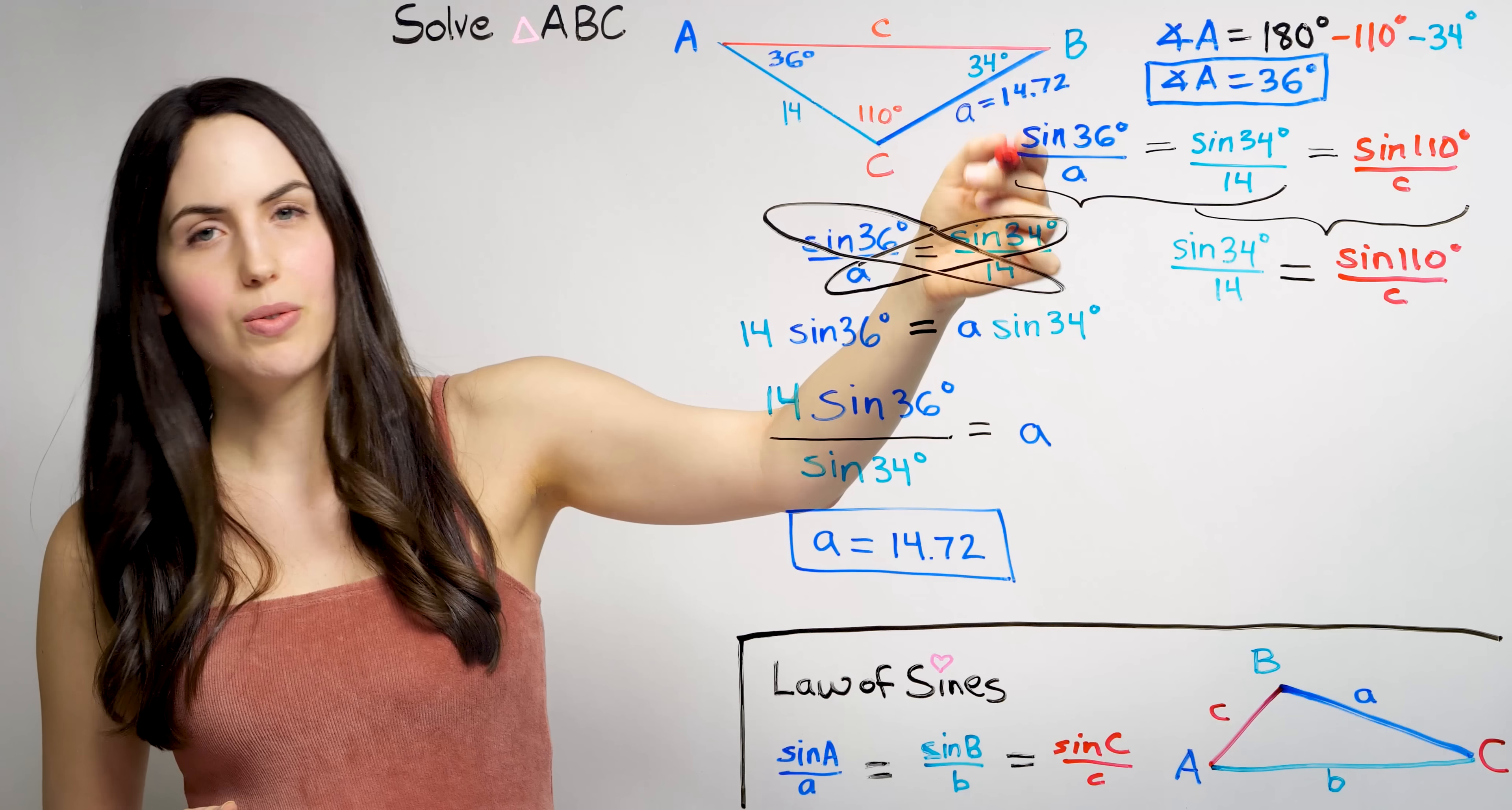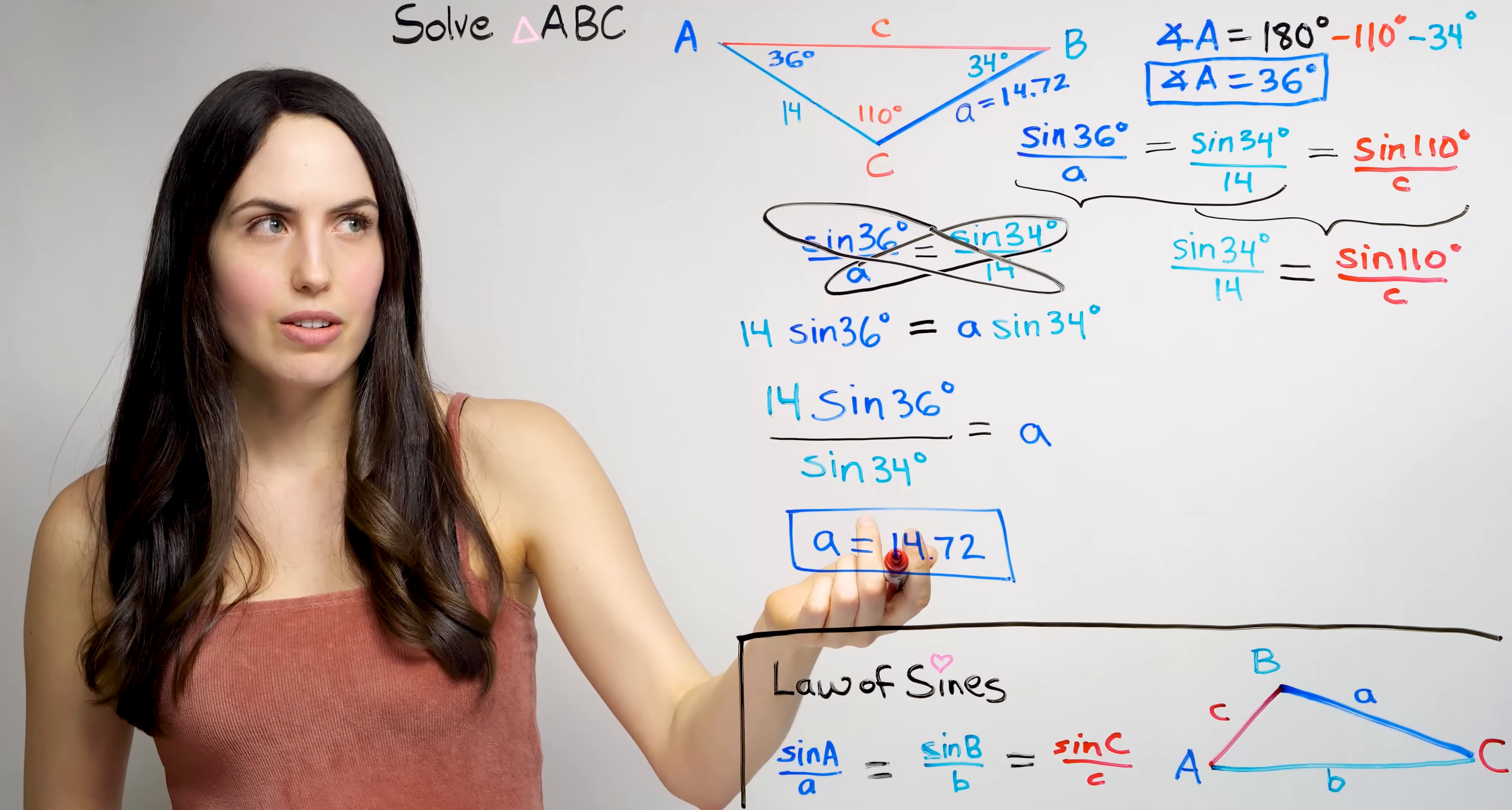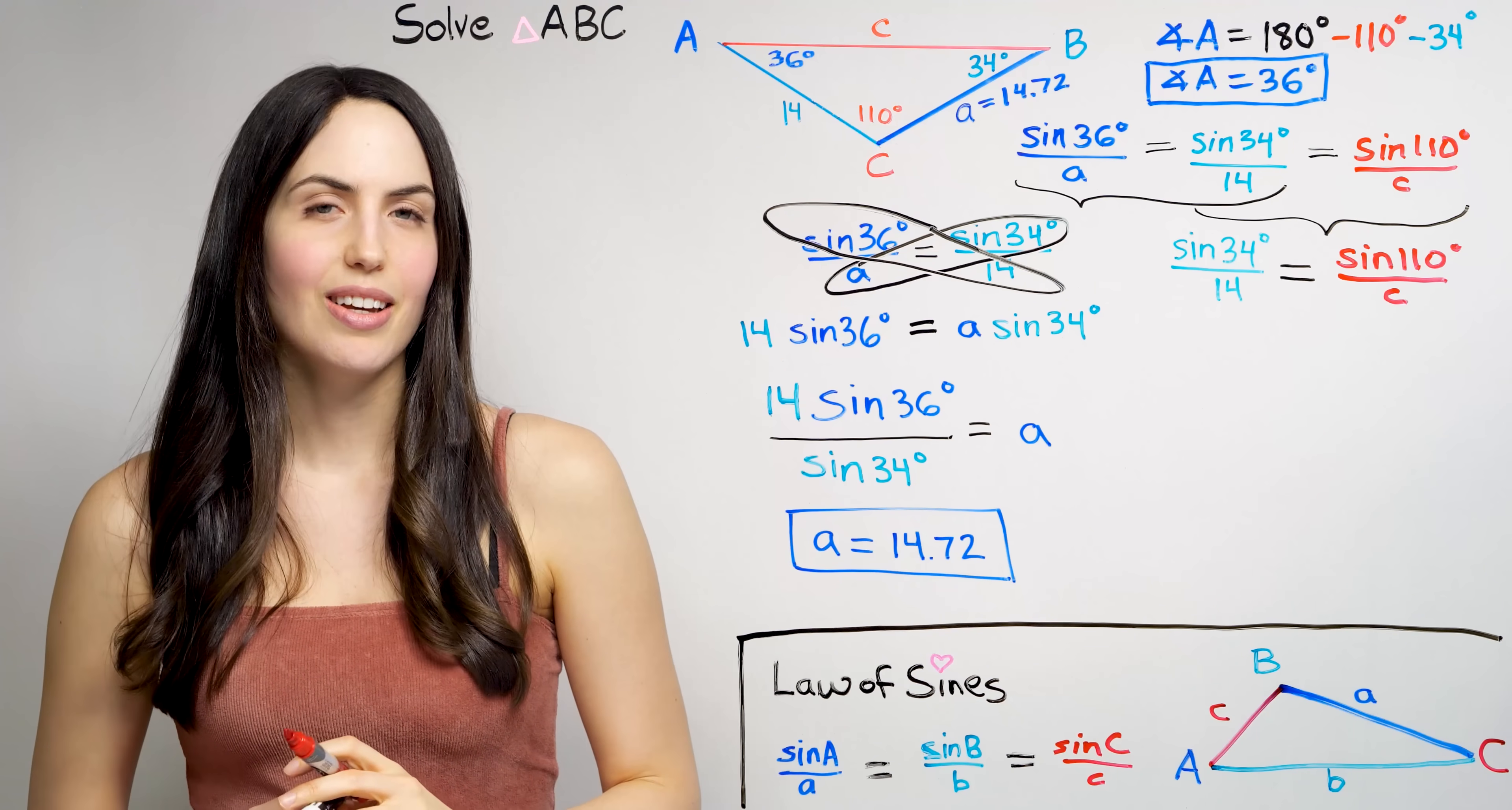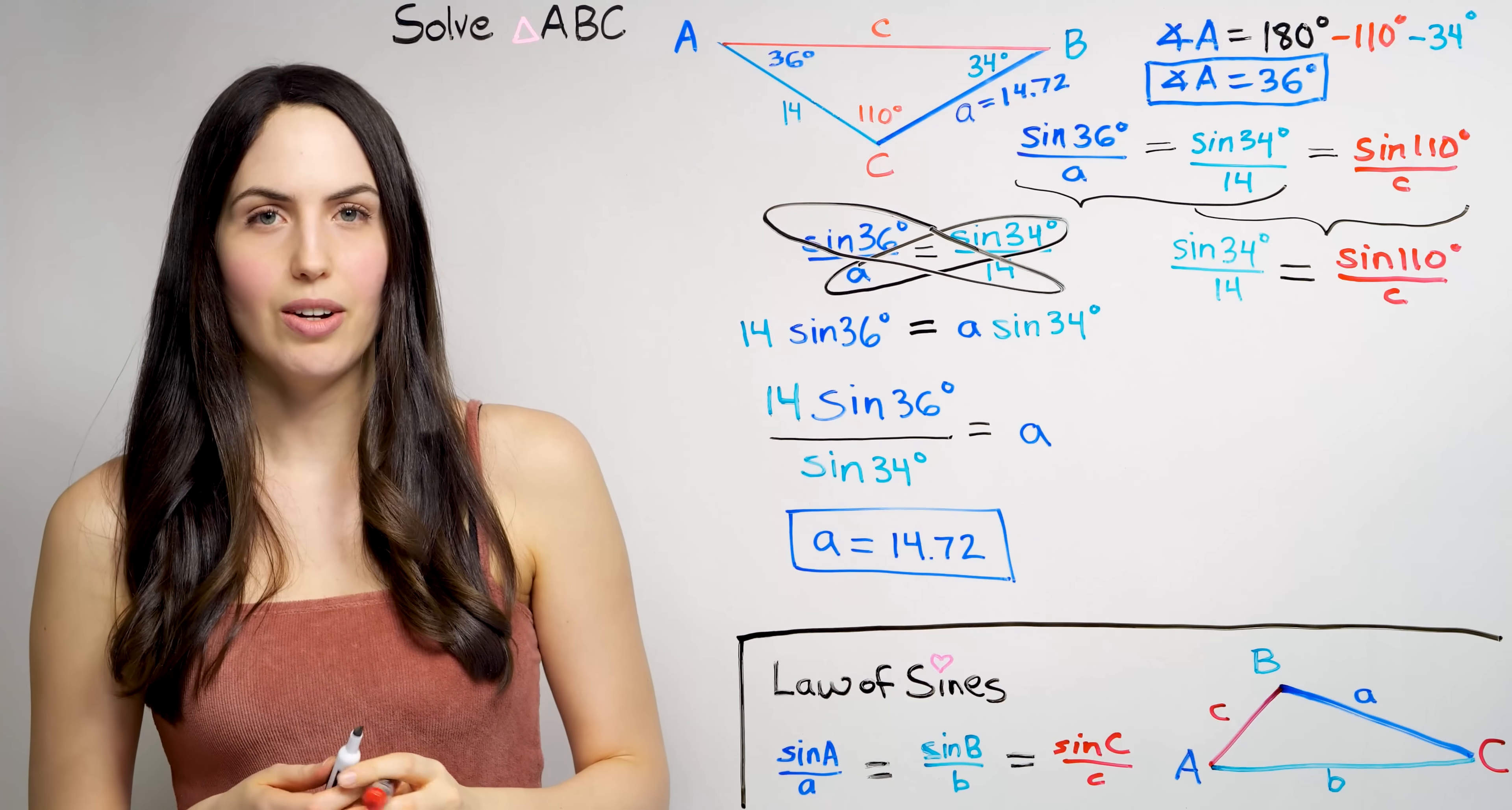So yeah, we could have set it equal to this ratio now, because we do know A. But then you'd have to make sure to use the unrounded version of that. Maybe plug it in again. Seems like more work, more risk. Seems like a garbage idea to me. But you can. Go rogue. Just proceed at your own risk.